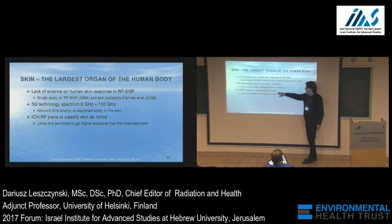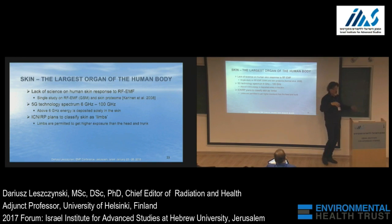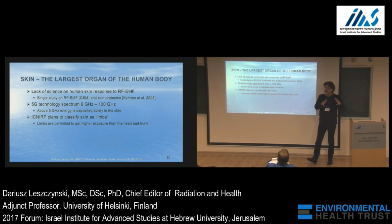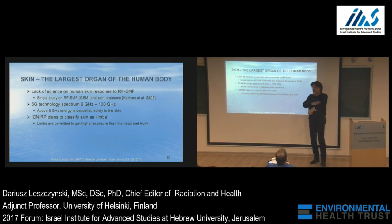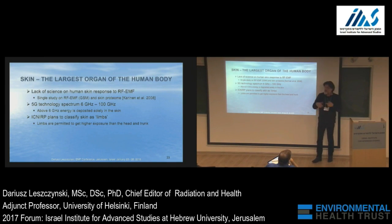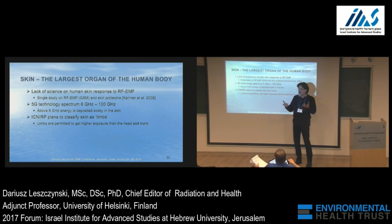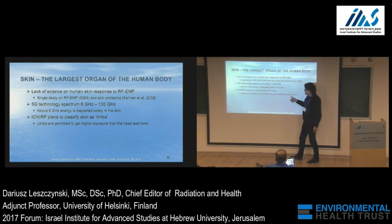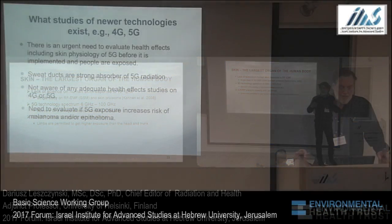What is being planned is to classify skin as belonging to limbs. They divide the body into head and trunk and limbs — head and trunk are the most important vital parts — while limbs include arms, legs, ears, and nose. These can be more exposed to radiation, which was acceptable for 1G, 2G, and 3G technology where radiation penetrated inside and irradiated the brain. Now 5G exposes only skin, but if you classify skin as limbs, no matter where it is, you are permitted to expose it to higher levels than would otherwise be allowed.